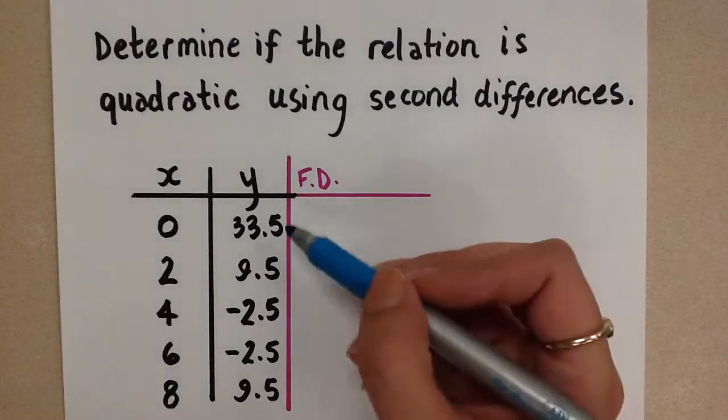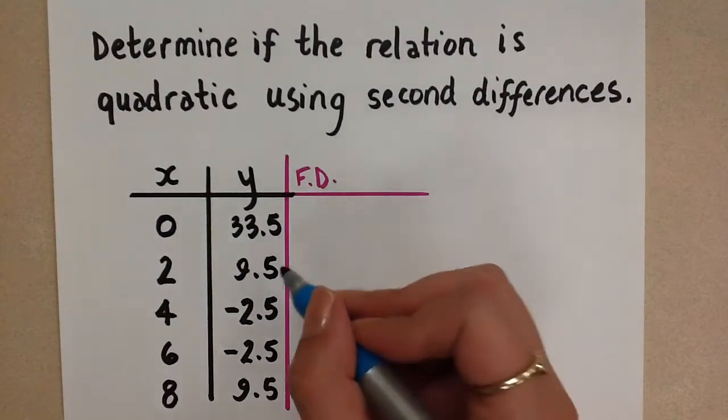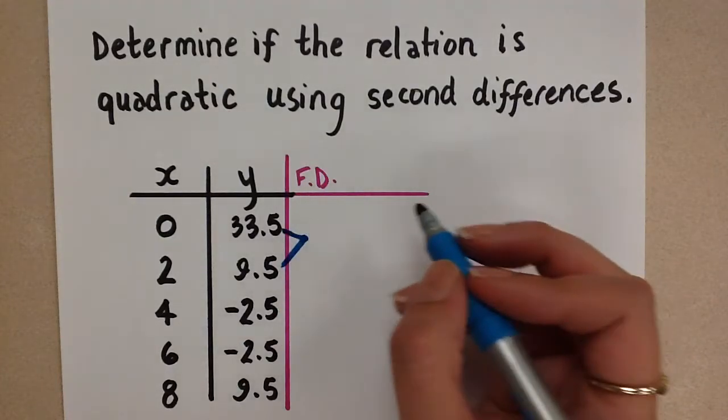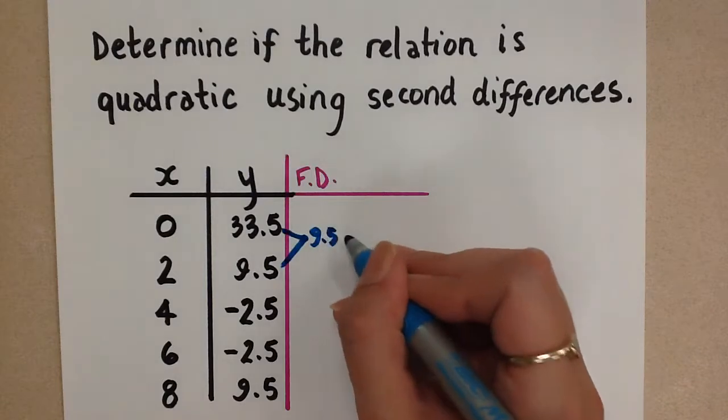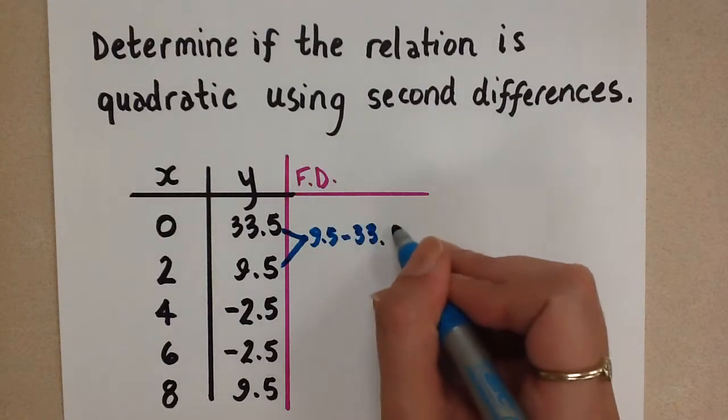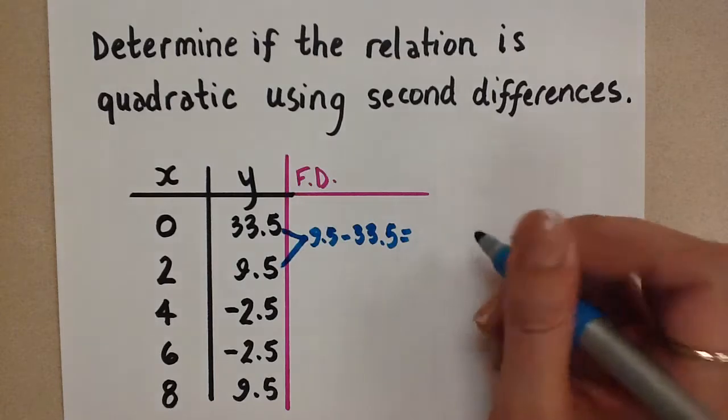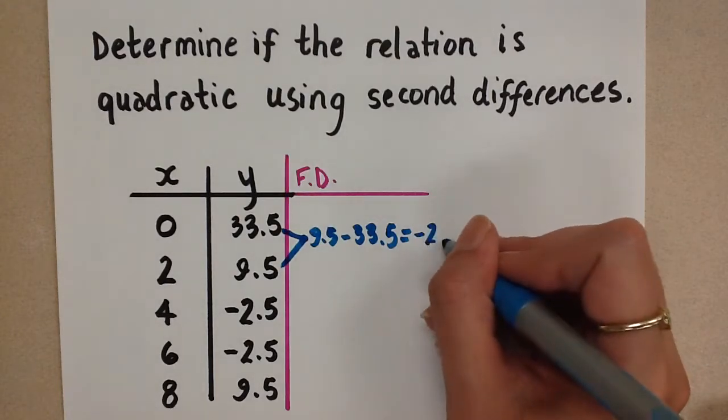So a good rule of thumb to follow is to do the second one minus the first one. So we'll do 9.5 minus 33.5. So we can go ahead and subtract. When we do that, you can plug it into a calculator, 9.5 minus 33.5. If you struggle with doing these things in your head, we get negative 24.